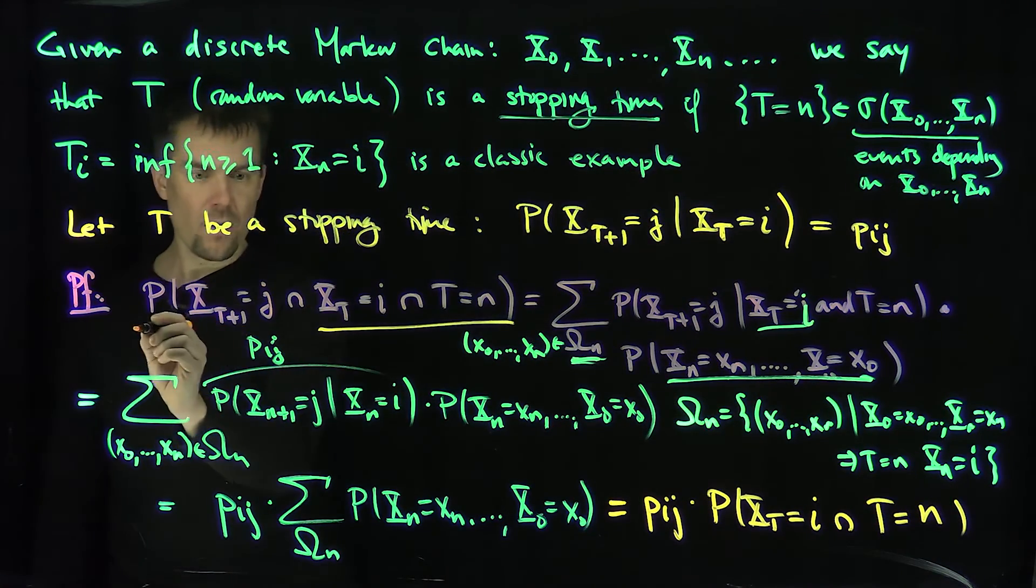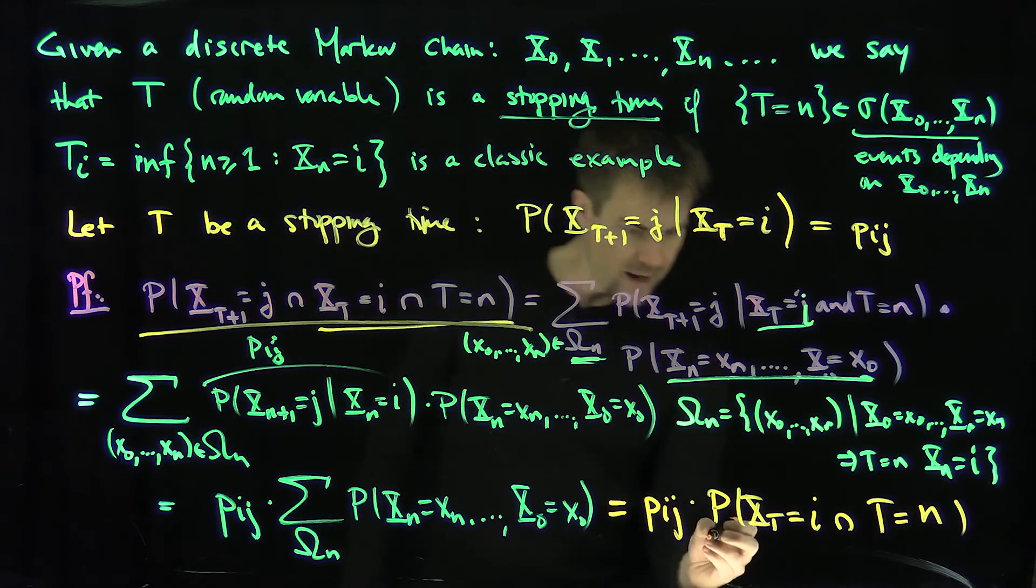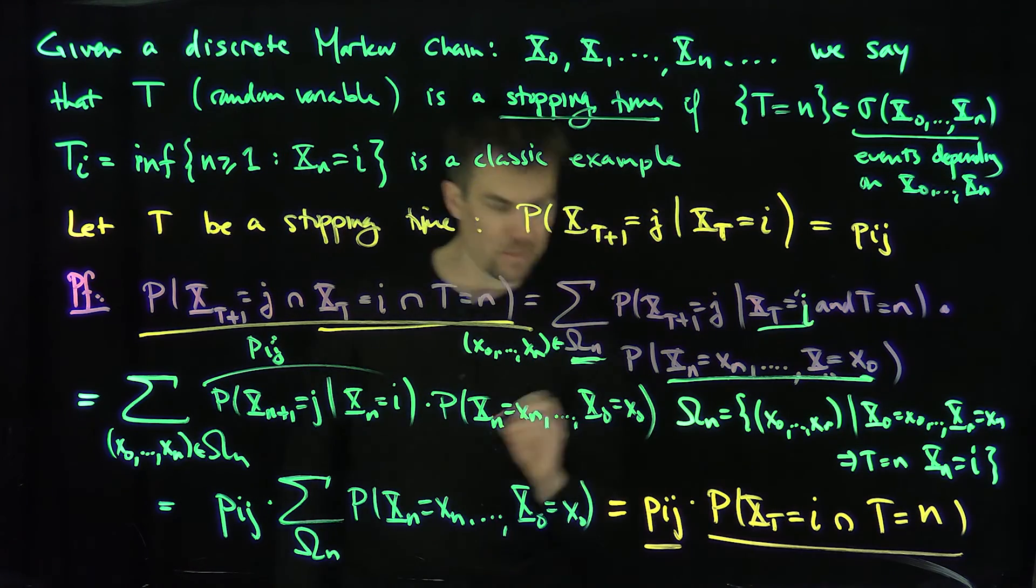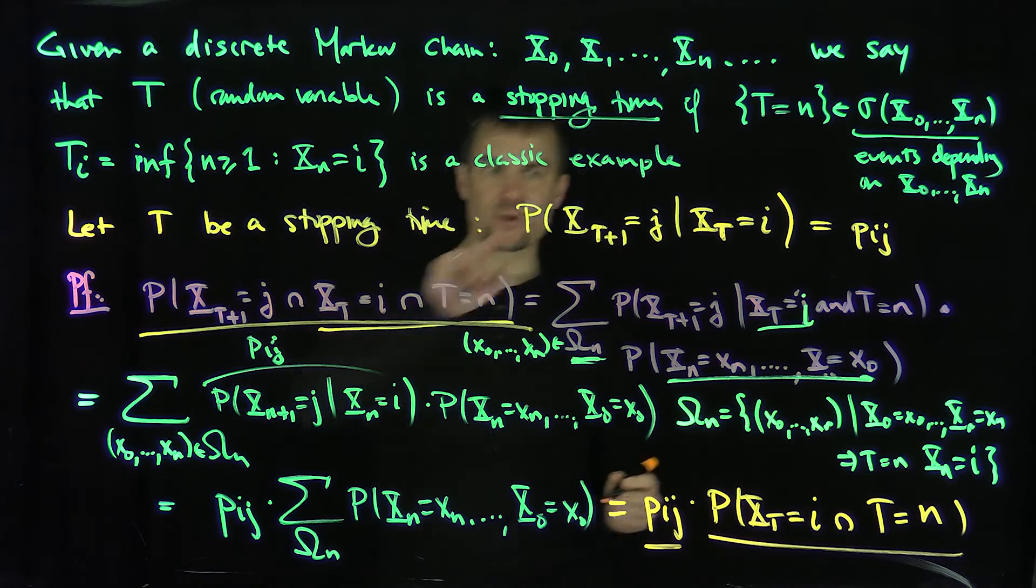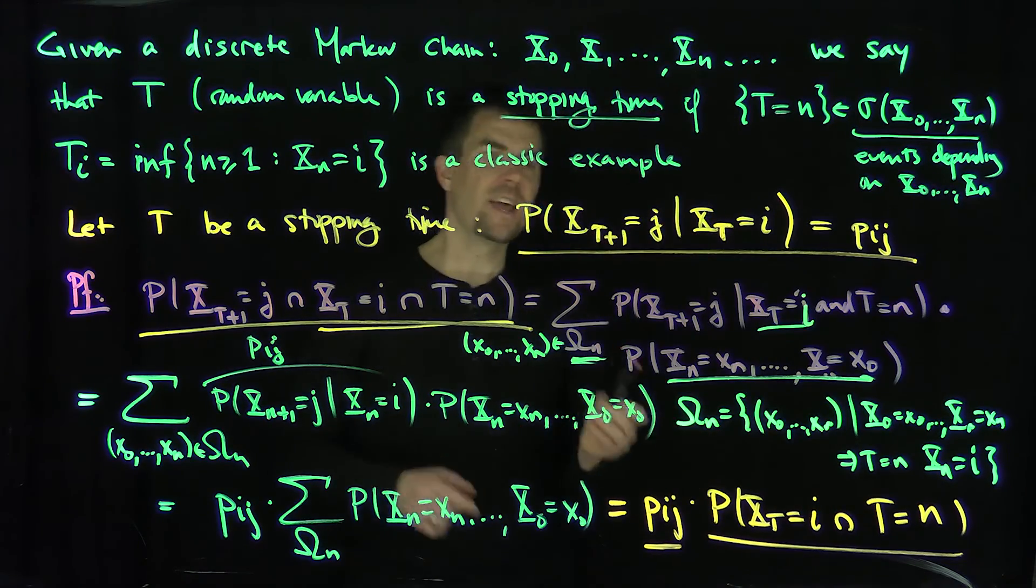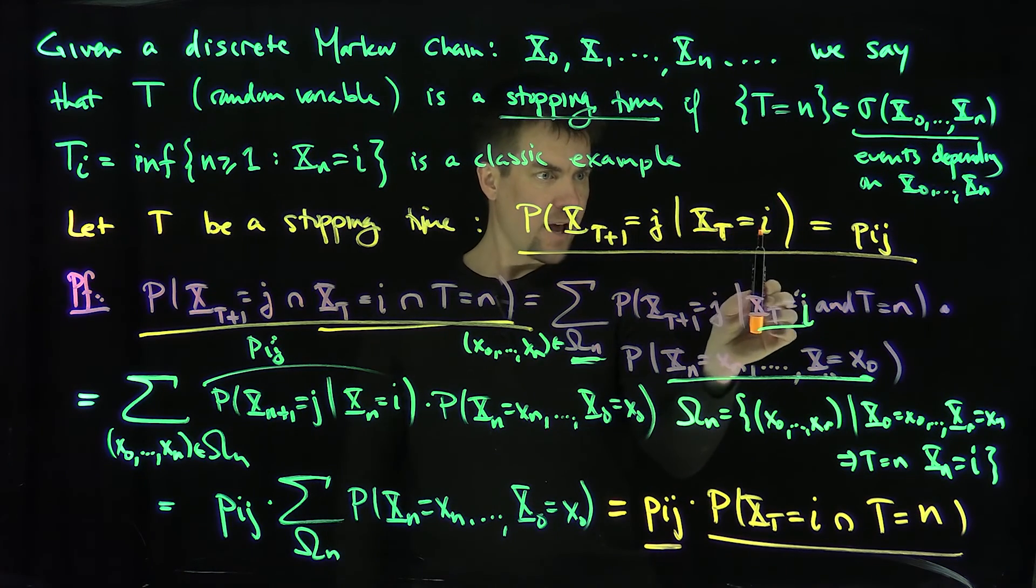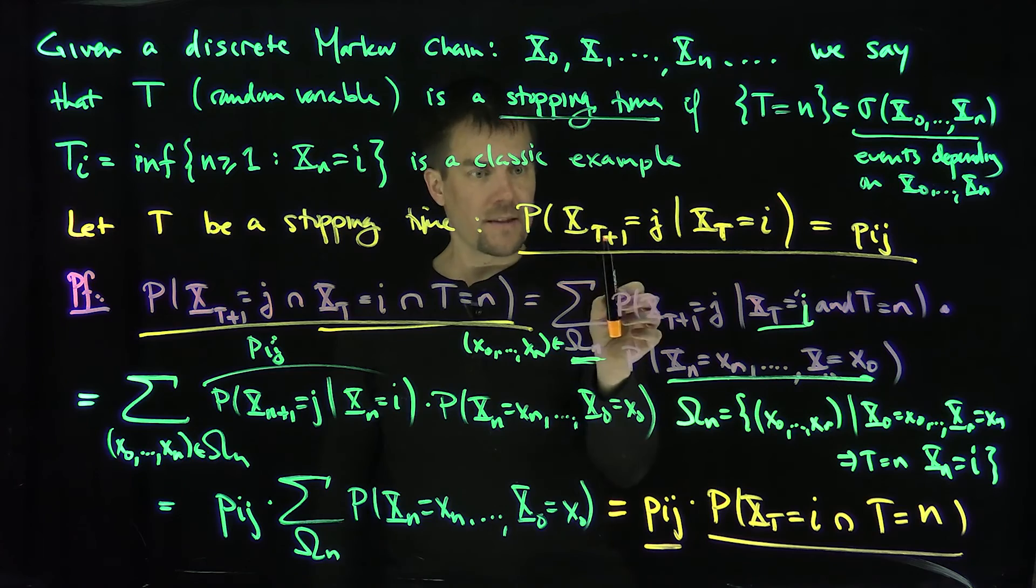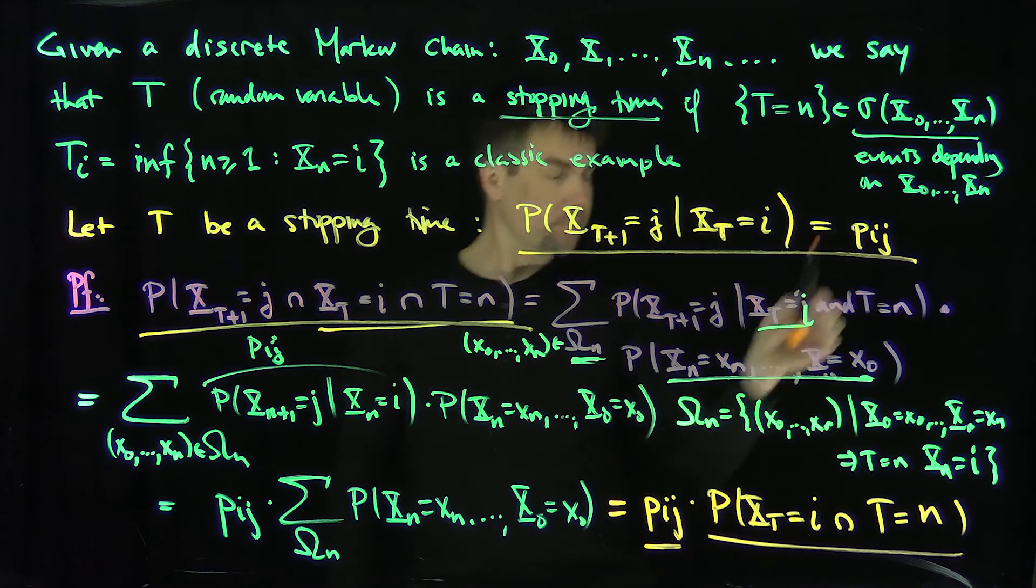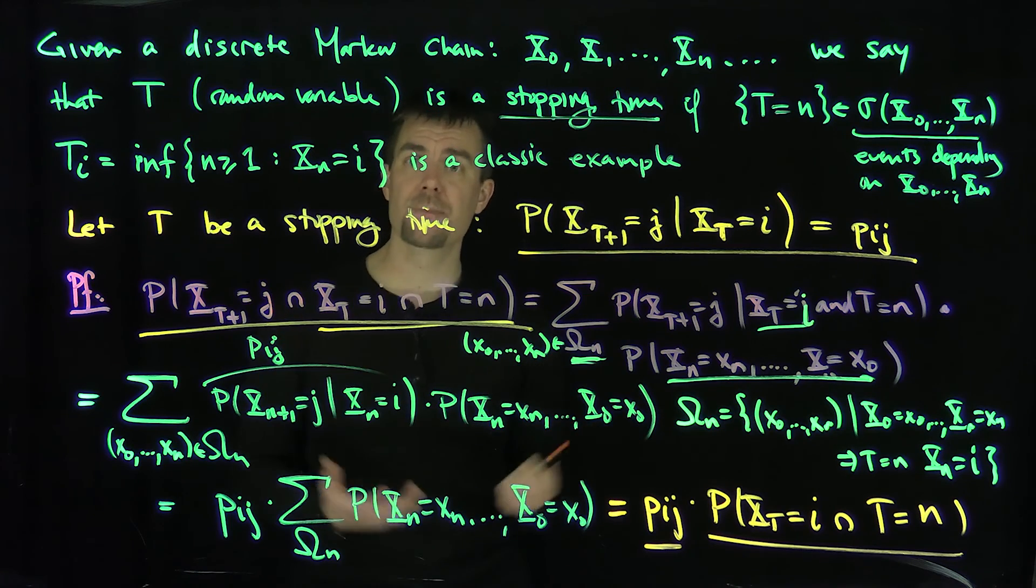So now what do I have over here? So now I can say that if I look at this probability divided by this probability, that has to be equal to p_ij. But what is this intersection probability? That's exactly equal to this step over here. So in other words, if I go from a stopping time, if I have my process at a stopping time, t at i, going to j at the next point in time, is exactly the ordinary transition probability. And this is called the strong Markov property of a discrete Markov chain. Thank you very much.